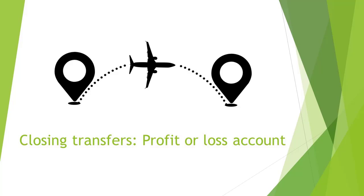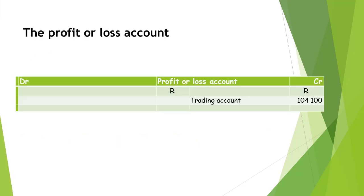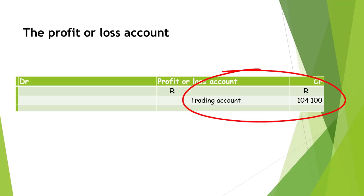In this short video, we will discuss the closing transfers relating to the profit or loss account. All income and expense accounts are closed off to the profit or loss account. This means that once all closing transfers are done to this account, the net profit or net loss made during the financial period can be calculated in this account.